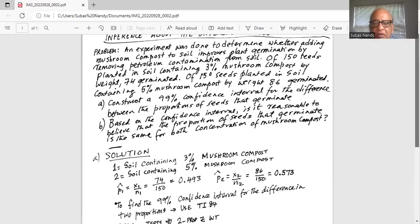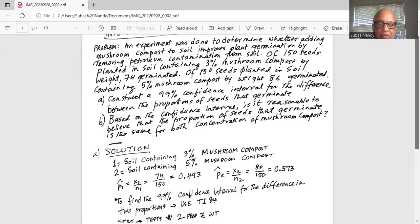Similarly, p2 hat, the sample proportion of seeds that germinate in soil containing five percent mushroom compost, is x2 divided by n2, which is 86 over 150 or 0.573.